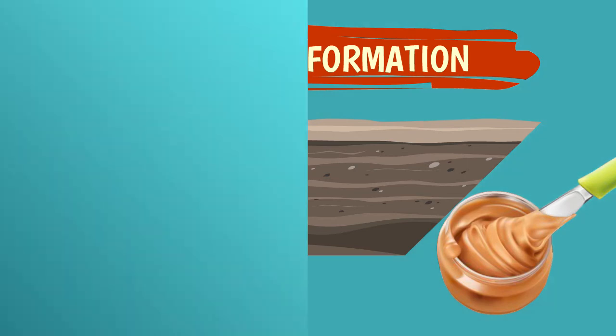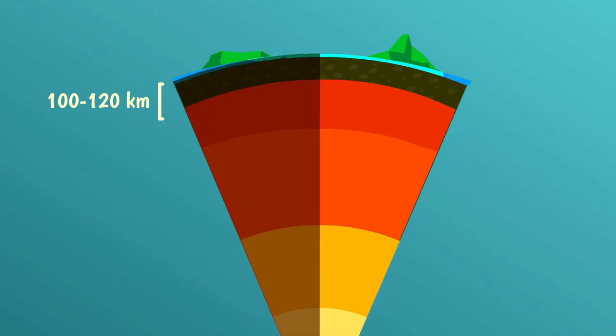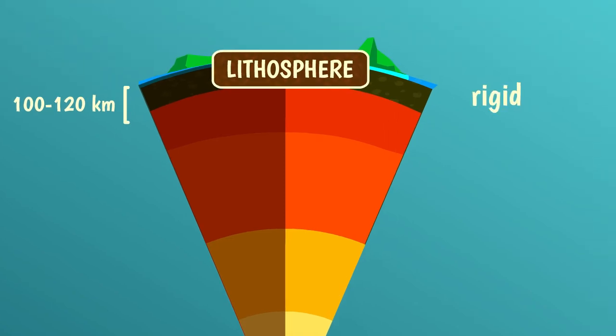Near the surface, in the crust and in the uppermost mantle, the temperatures are still relatively cold. You may have experienced that when a spread comes right out of the fridge, it is more difficult to spread, and therefore less ductile. So the same is true for rocks. The outer layer of the planet, called the lithosphere, contains rocks that are relatively cold and therefore quite rigid.